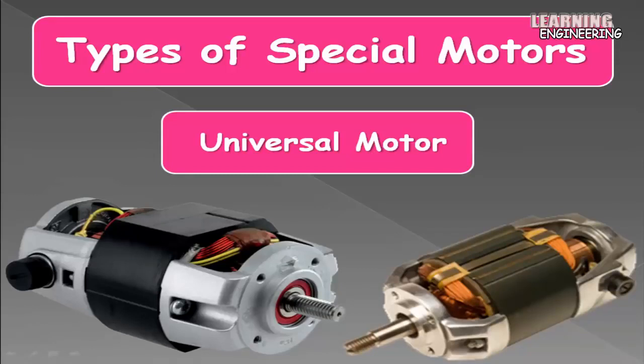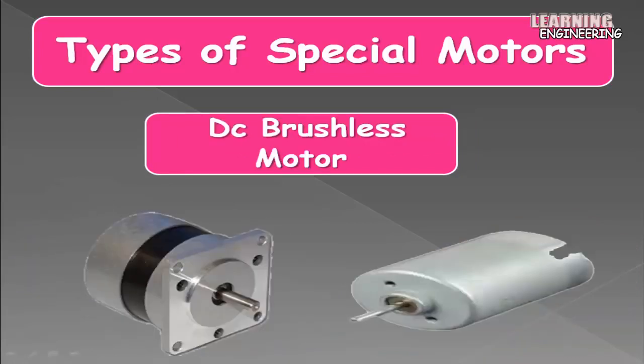Universal motor: the universal motor is so named because it is a type of electric motor that can operate on both AC or DC power. It is a commutated series-wound motor where the stator's field coils are connected in series with the rotor windings through a commutator. It is often referred to as an AC series motor, and is very similar to a DC series motor in construction but modified slightly to allow operation on AC power.